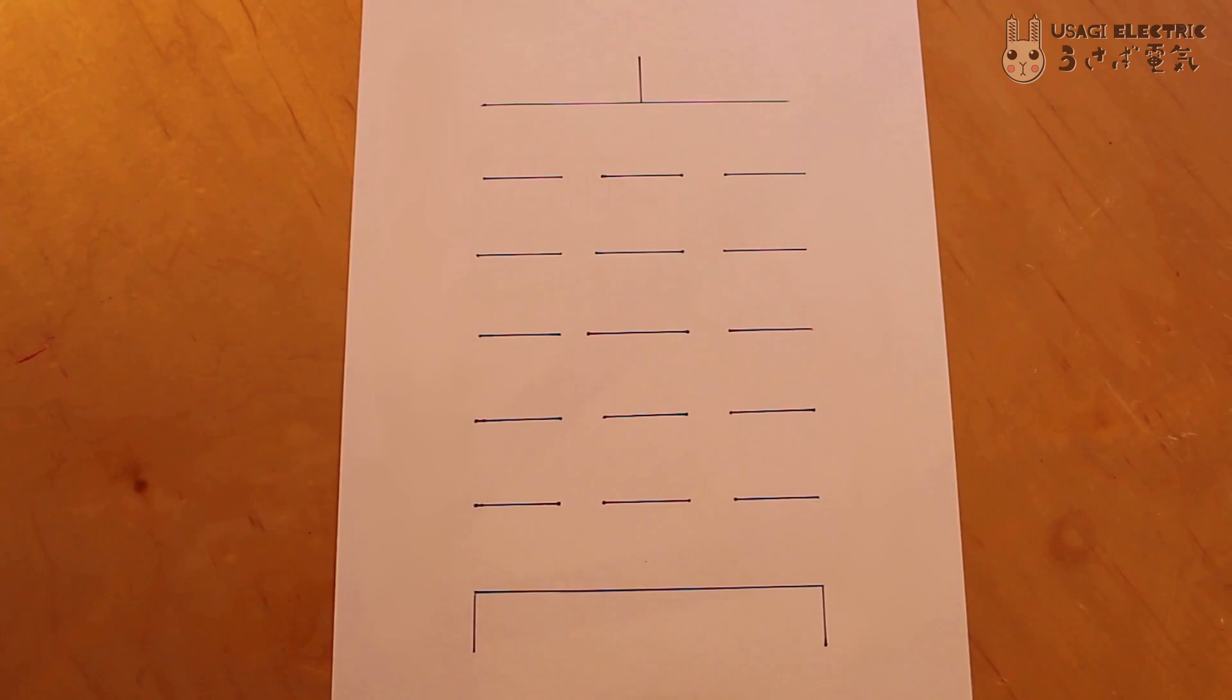Just like in a normal pentode, the suppressor grid is tied to ground and the two screen grids are tied together and pulled high through a relatively small resistor. This just leaves two different control grids.